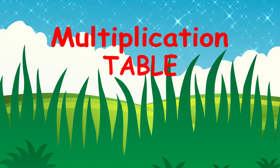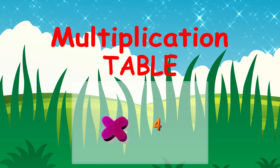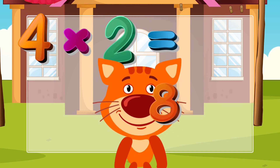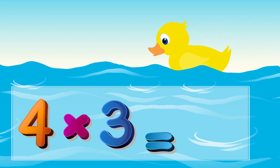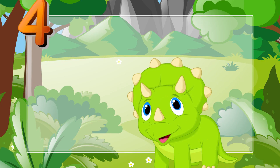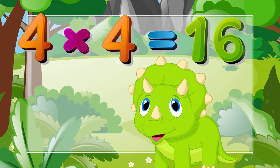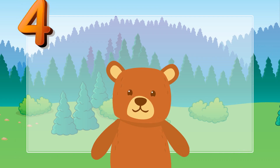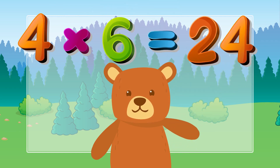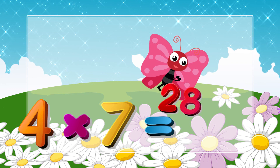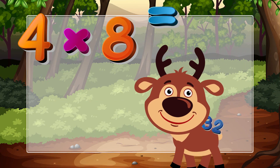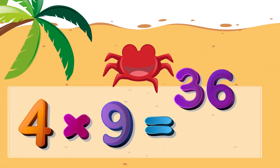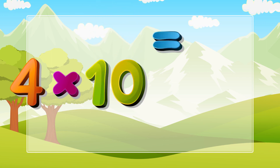Four times table. Four times two is eight, four times three is twelve, four times four is sixteen, four times five is twenty, four times six is twenty-four, four times seven is twenty-eight, four times eight is thirty-two, four times nine is thirty-six, four times ten is forty.